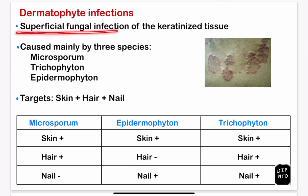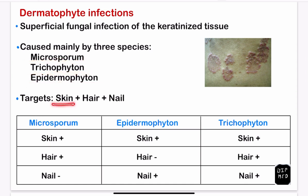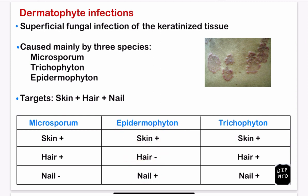Dermatophyte infections are the superficial fungal infections of the keratinized tissue — the infection of keratophilic fungi. These are usually caused by mainly three species: Microsporum, Trichophyton, and Epidermophyton. They usually target three types of tissues: skin, hair, and nails. Microsporum infects skin and hair but spares nails. Epidermophyton infects skin and nails but spares hair. Trichophyton infects all three.